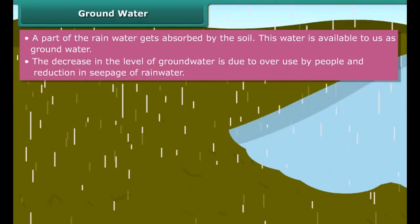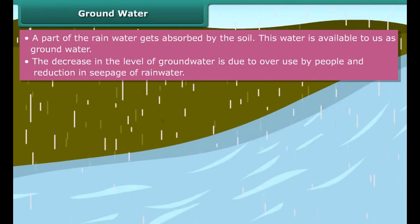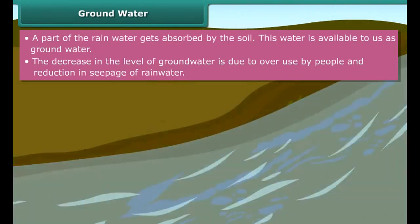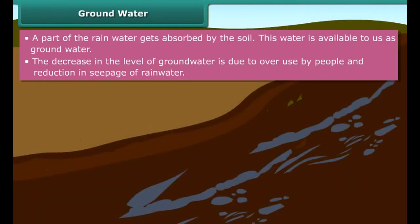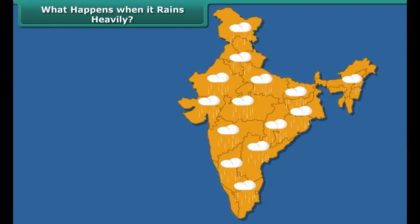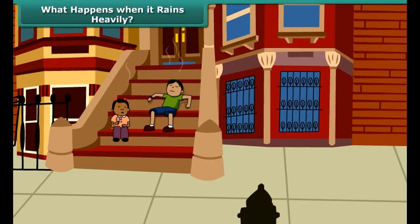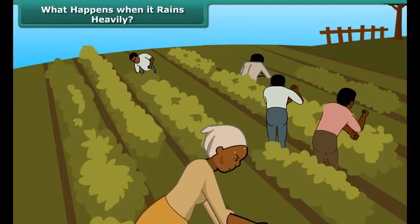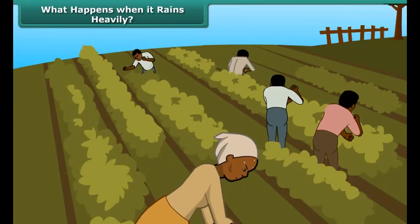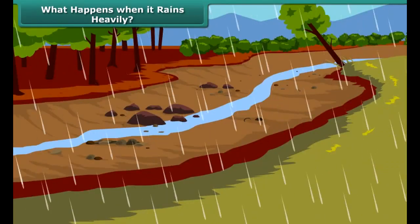In areas with little or no vegetation, the topsoil is loose and gets washed away by rainwater. Such areas get covered with concrete. As a result, there is reduced seepage of rainwater into the ground, which also contributes to the reduction in groundwater.